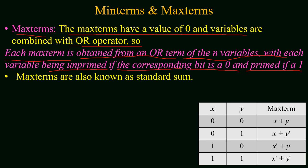Consider the example of two binary variables x and y, which have four possible binary combinations from 00 to 11. For the first case where both variables have a value of 0, the corresponding max term is x+y, because x+y means 0+0 which gives a value of 0, satisfying the max term condition.